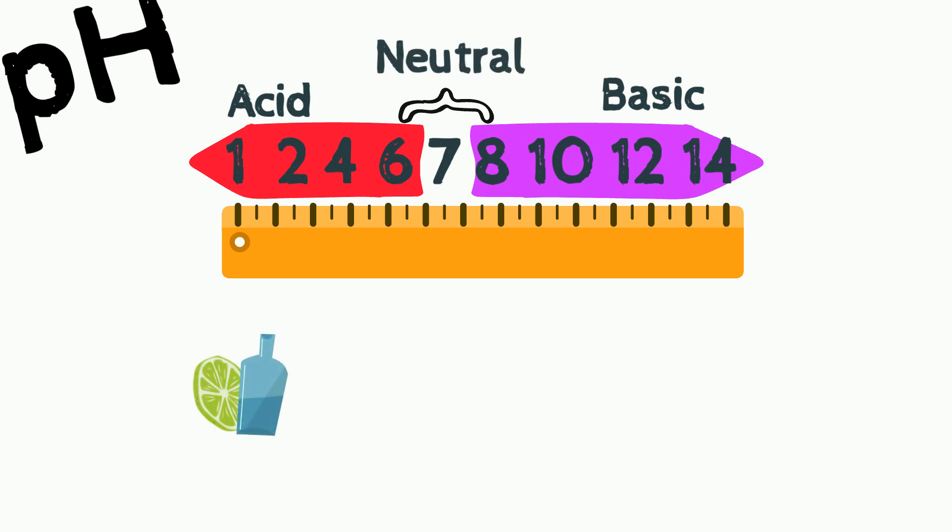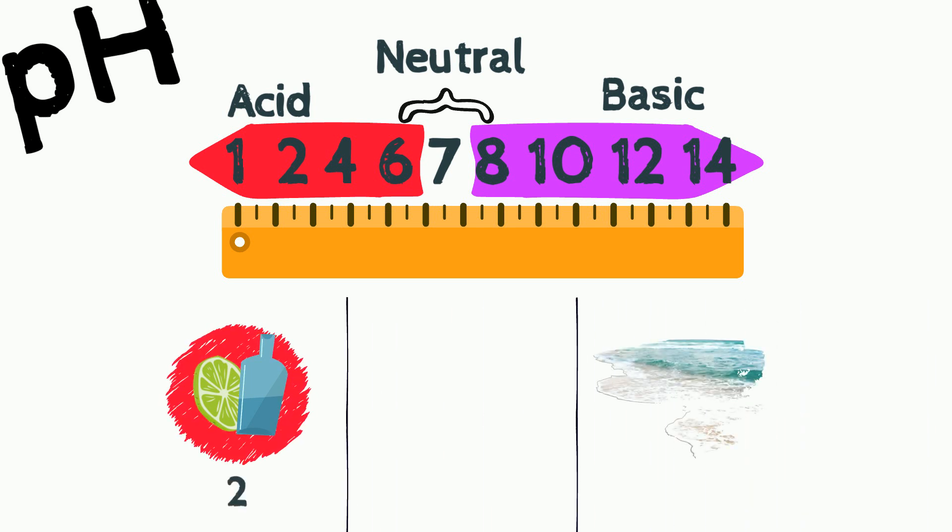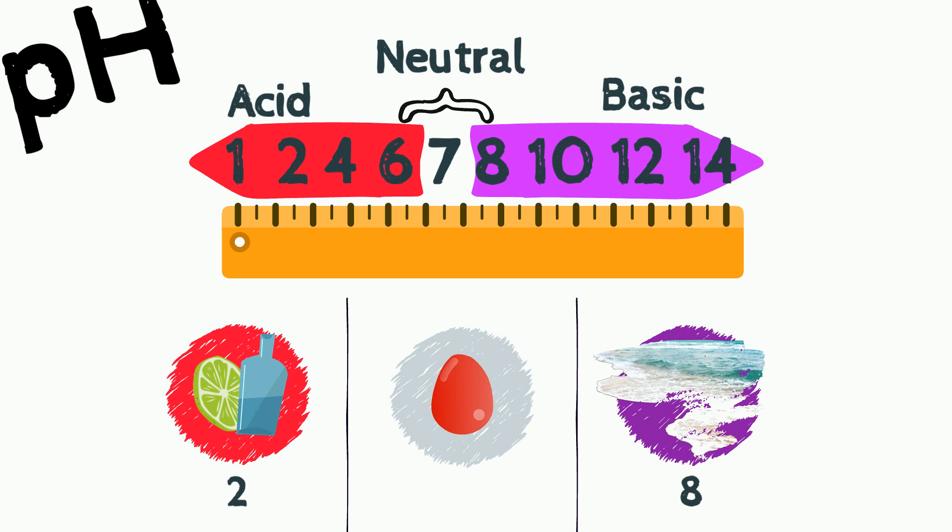Few examples: lemon juice or vinegar, the pH is close to 2. Sea water, the pH is close to 8. And blood, the pH is around 7 to 7.5.